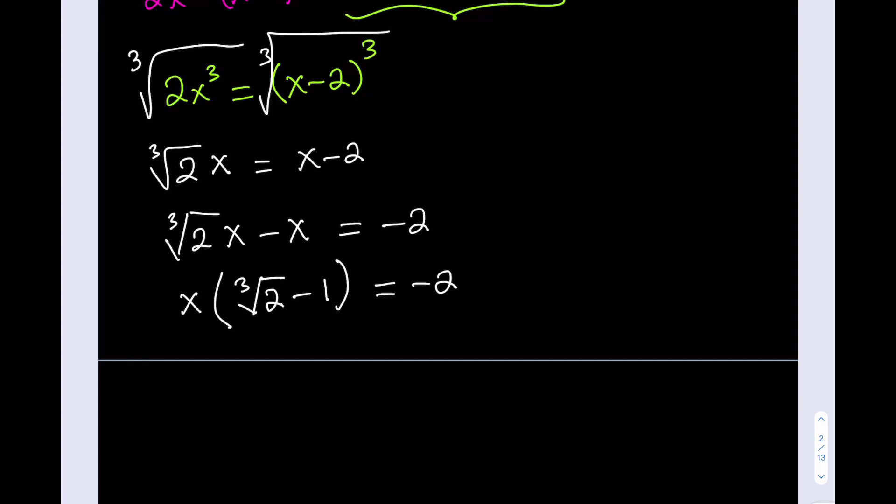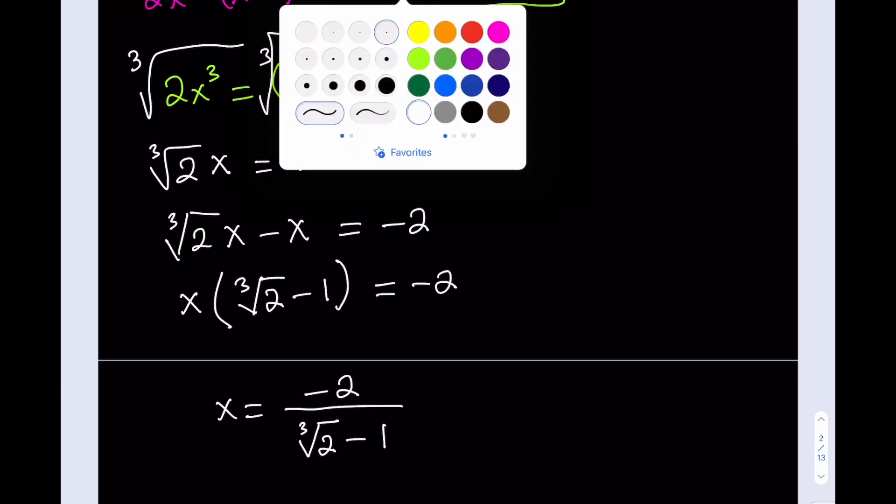Okay, so to find x here, we are supposed to divide. So x is going to equal negative 2 divided by cube root of 2 minus 1. Awesome. So this is the answer for x. But guess what? There's a radical at the bottom. So should we rationalize the denominator? It will be good. So how do you rationalize the denominator here?